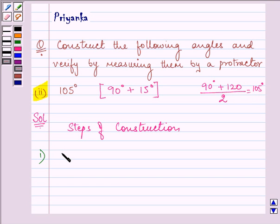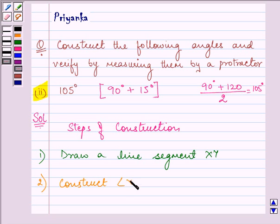The first step is to draw a line segment. Let's take XY. Then I need to construct angle YXT equal to 120 degrees and angle YXS equal to 90 degrees. Let us draw line segment XY first.